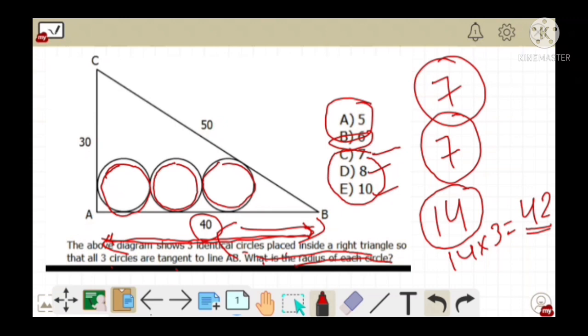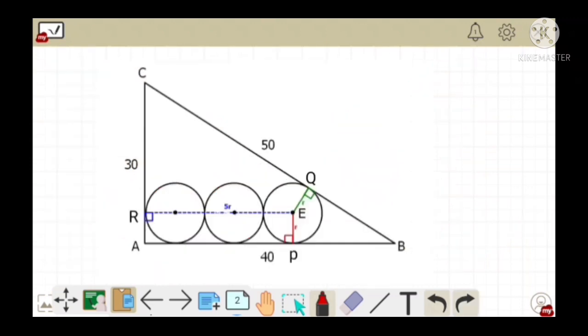Now let's try to solve this question using another method. For this, first of all, if we add the centers of each circle as well as the point E, we get the following figure. Don't forget to name the points as shown in the screen.